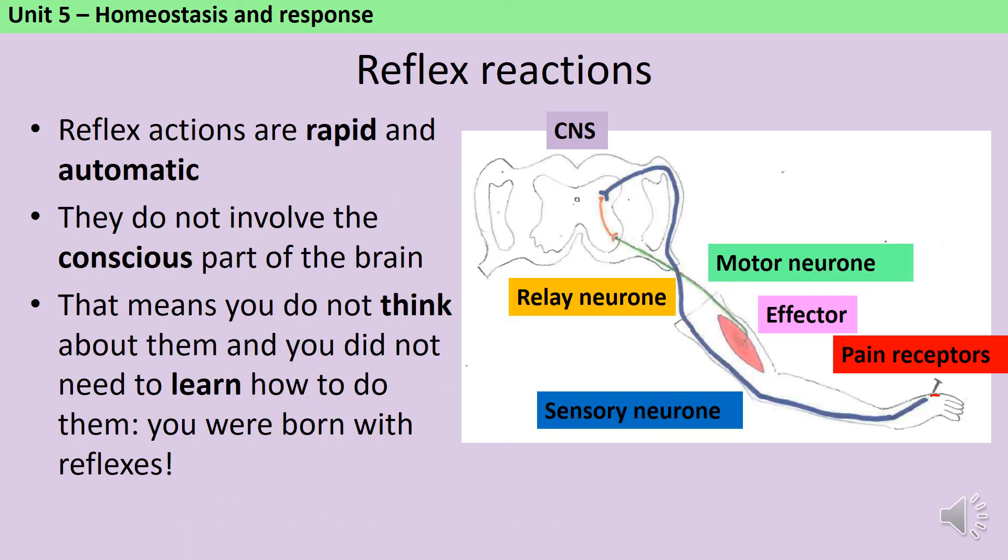In order to describe what happens during a reflex, you need to be able to name six parts of the nervous system. We have the receptors, which are responsible for sensing the stimulus, three types of neurons: sensory neurons, relay neurons, and motor neurons, the central nervous system, and an effector gland or effector organ. Remember, effectors are going to be muscles or glands.